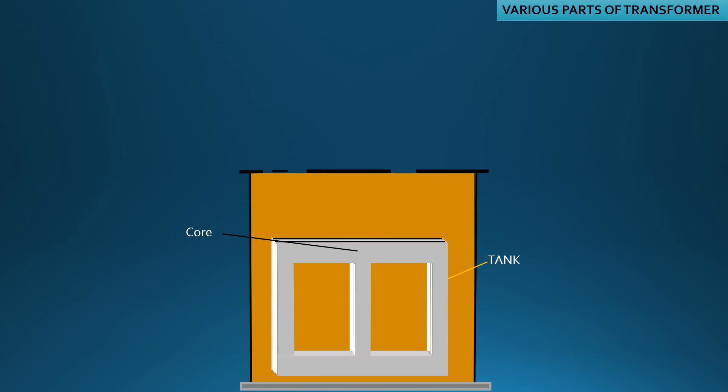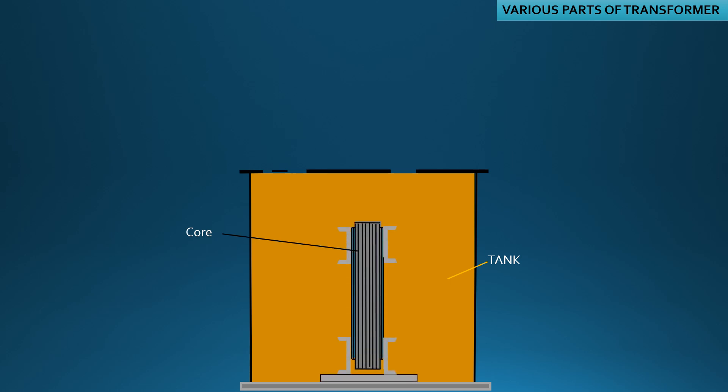Why is the core laminated? The core is laminated in order to reduce the eddy current loss, as the loss is directly proportional to the thickness of the core. The laminated cores are insulated from each other.